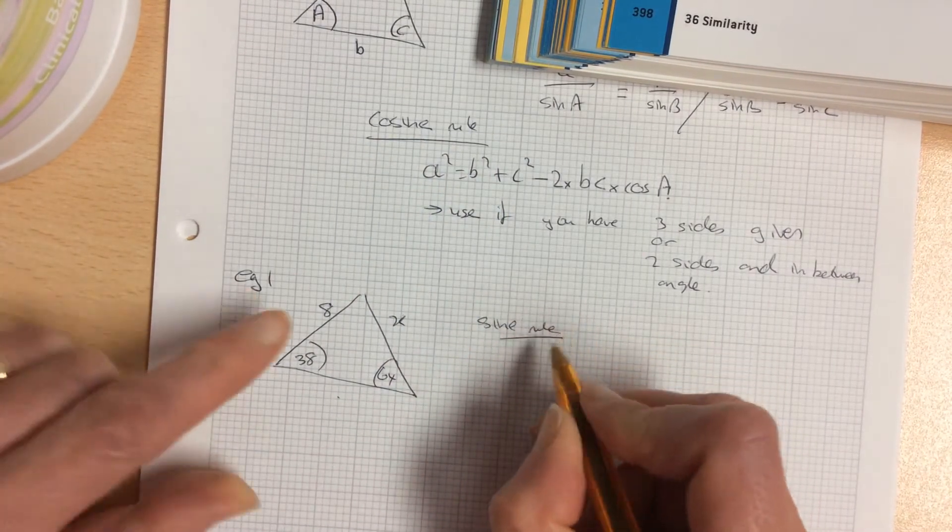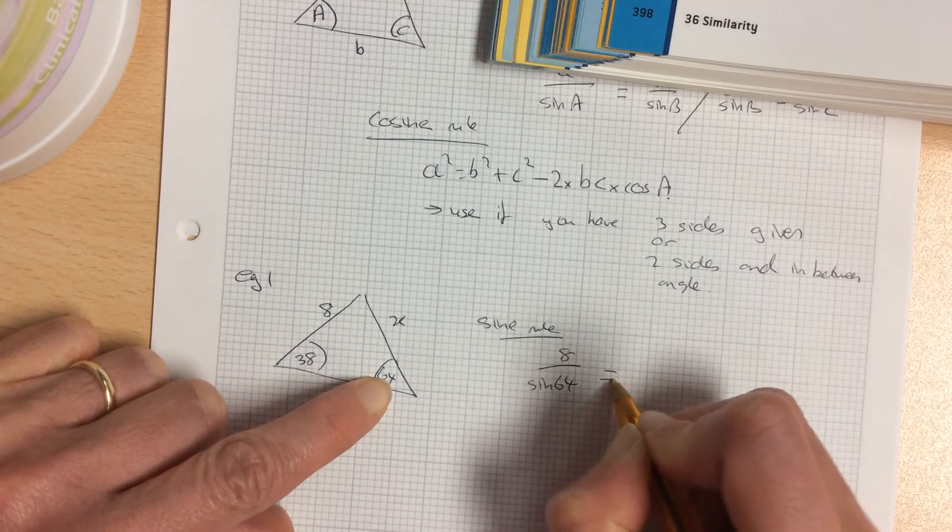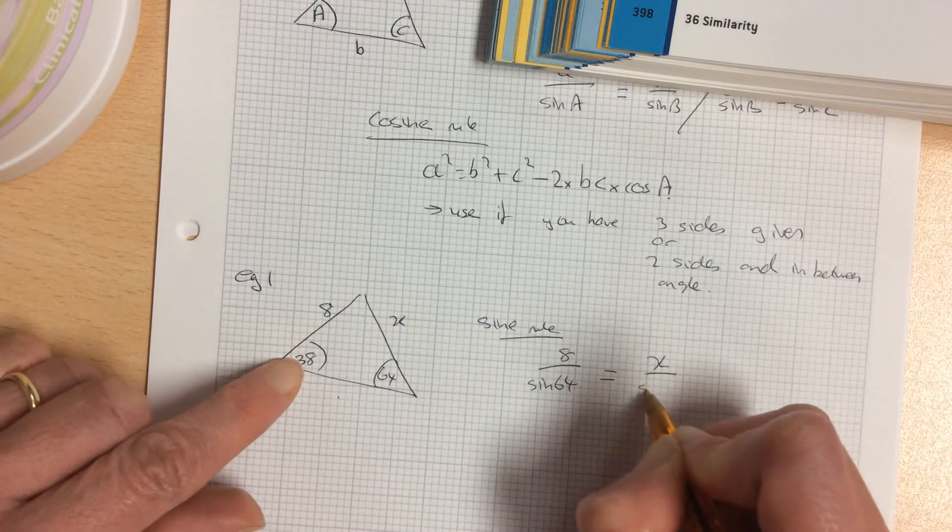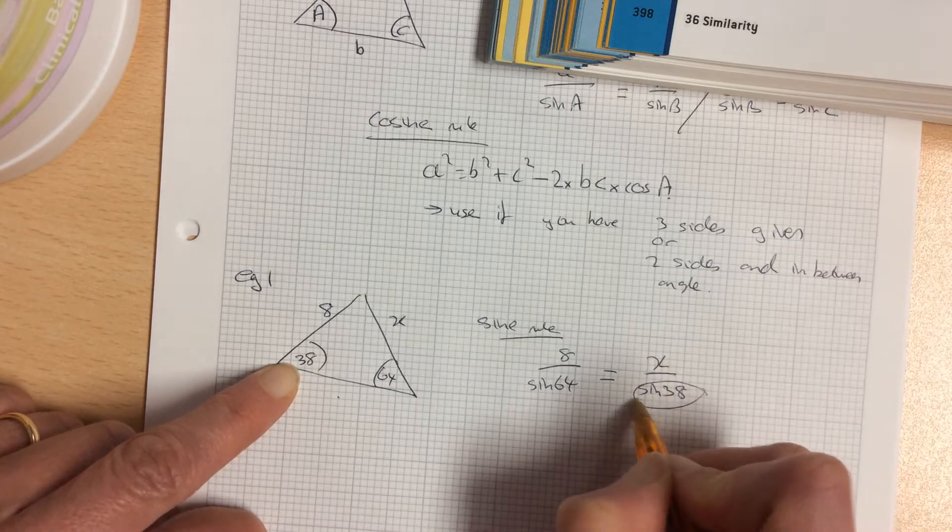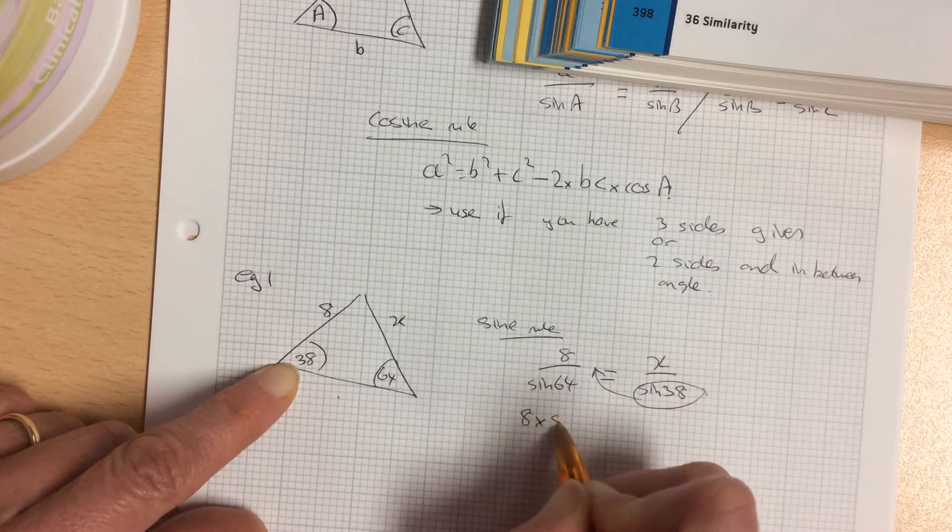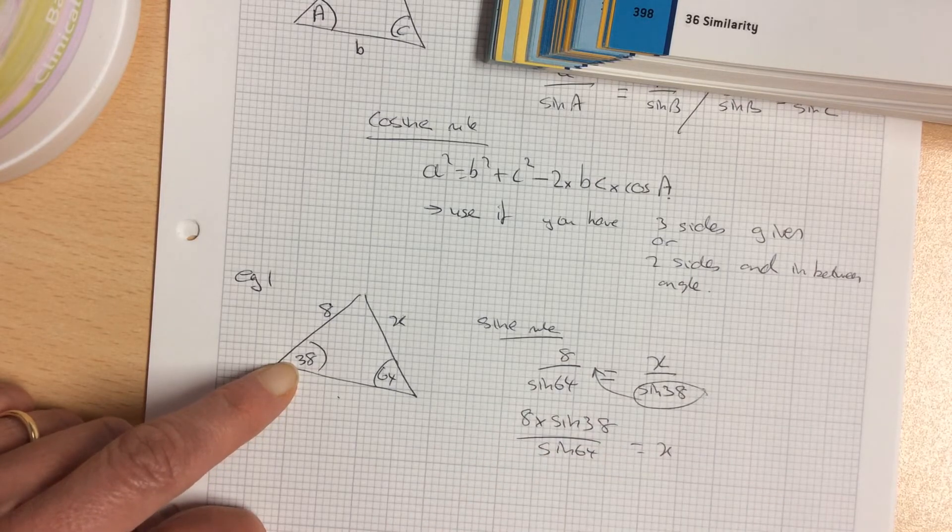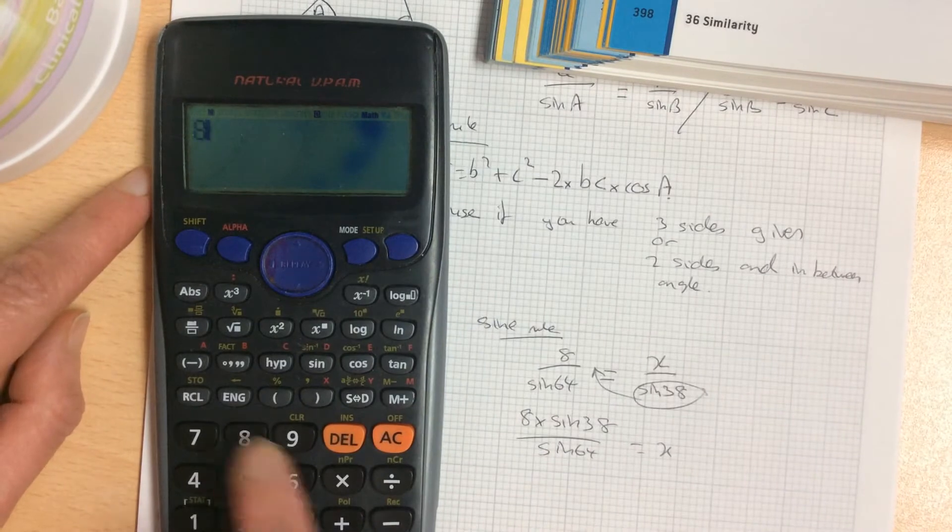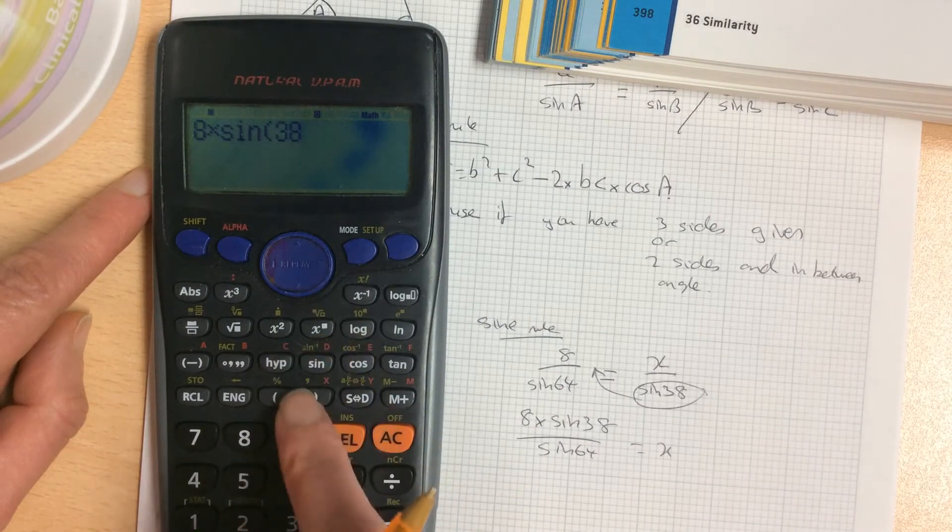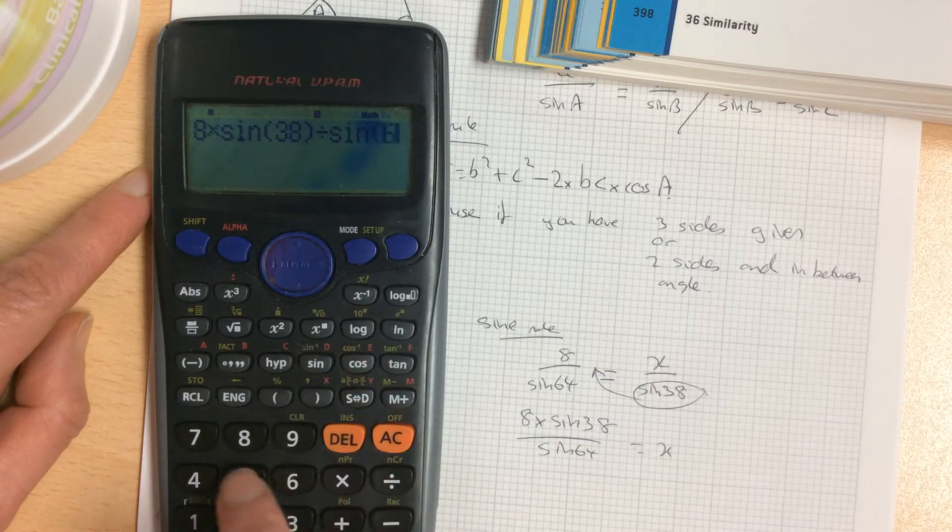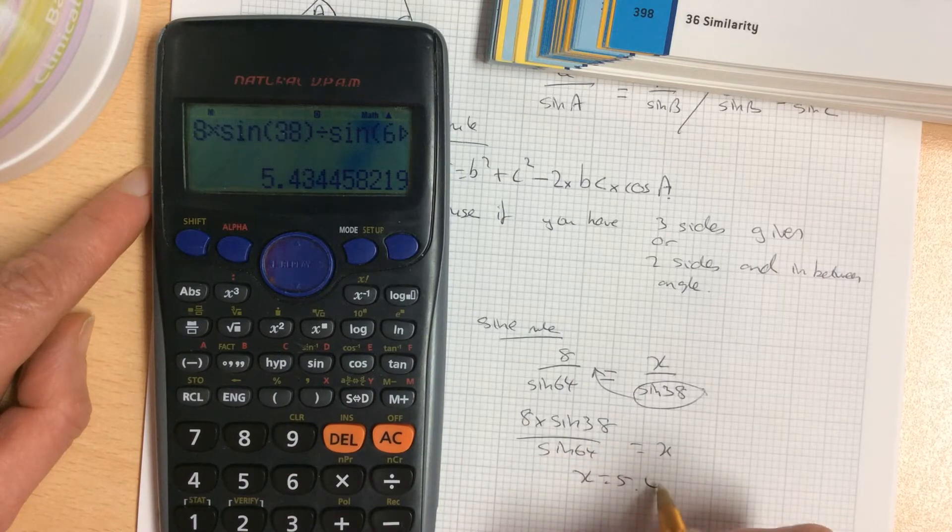The sine rule is side over sine the opposite angle equals side over sine the opposite angle. I'm trying to find X. So bring this across and it becomes a multiply. It's 8 times sine 38, close your bracket, divide it by sine 64, close your bracket. So X equals 5.43.